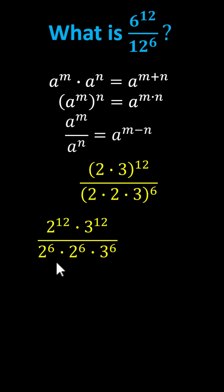For the next step, let's multiply 2 to the power of 6 times 2 to the power of 6. Because the bases are the same, we add the exponents, giving us 2 to the power of 12.